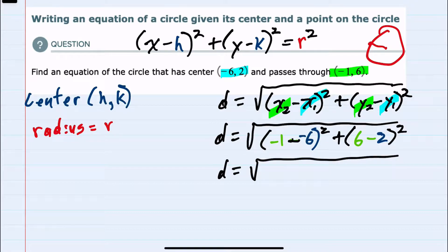First noting that minusing a negative is the same as adding. So that will be 5² plus 4² from the 6 minus 2.